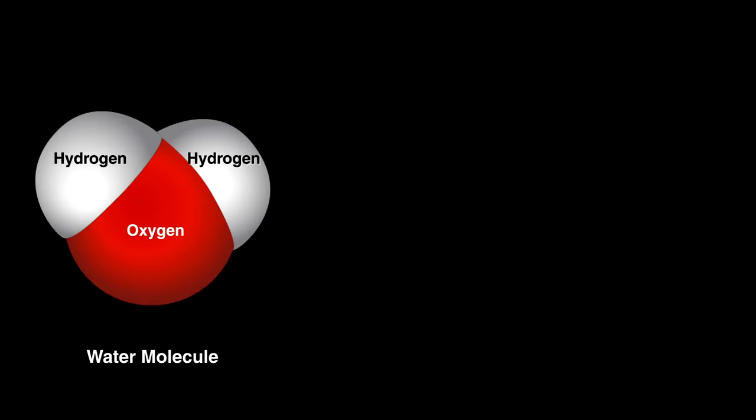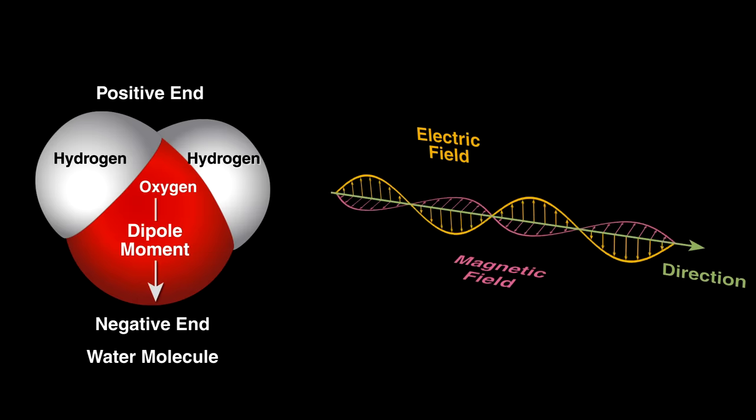Our food is filled with water, which is positively charged at one end and negative at the other. To give these molecules more energy, we expose it to electromagnetic waves that emanate from the tube.